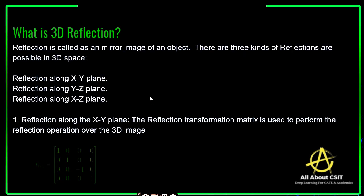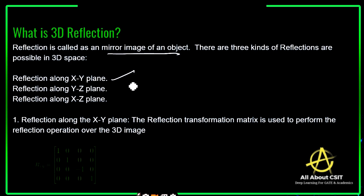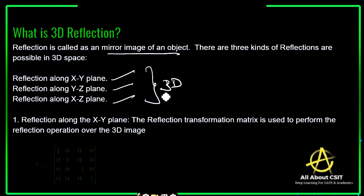So what is 3D reflection? Reflection is nothing but a mirror image of an object. There are three kinds of reflections possible in 3D space: reflection along the XY plane, reflection along the YZ plane, and reflection along the XZ plane. Because this is a 3D image, it is present on the XYZ plane.